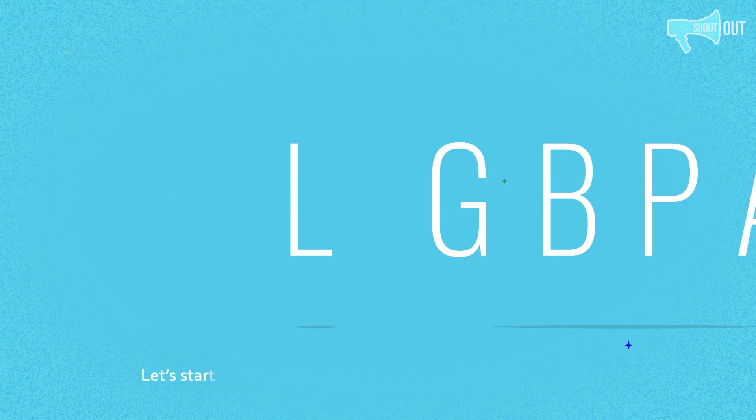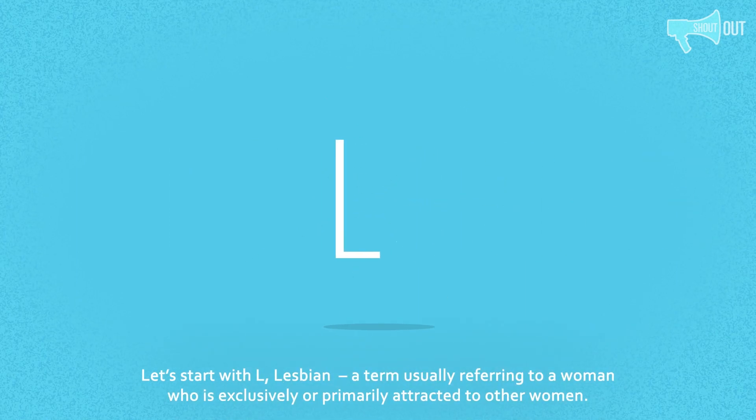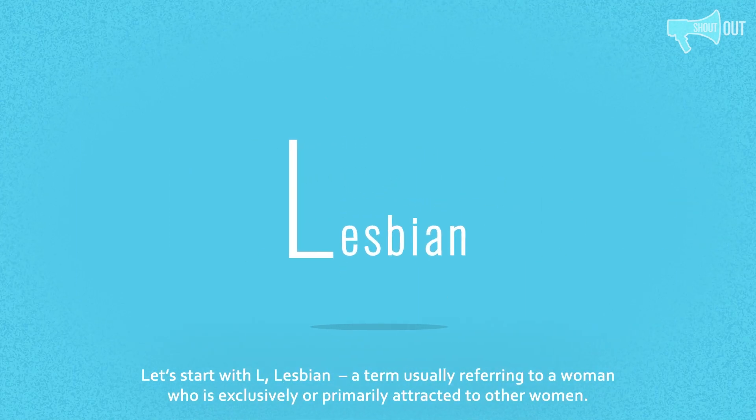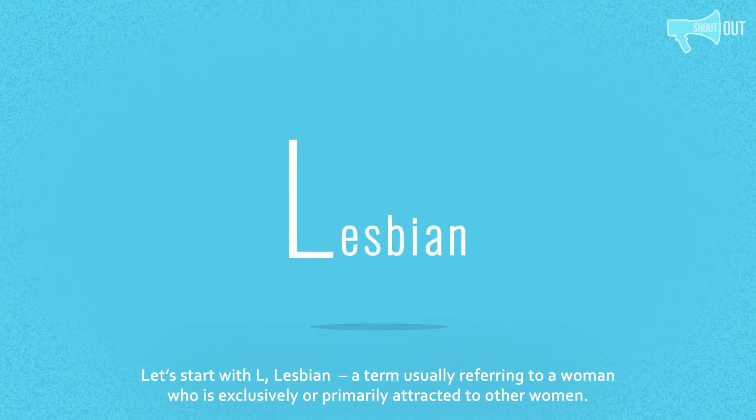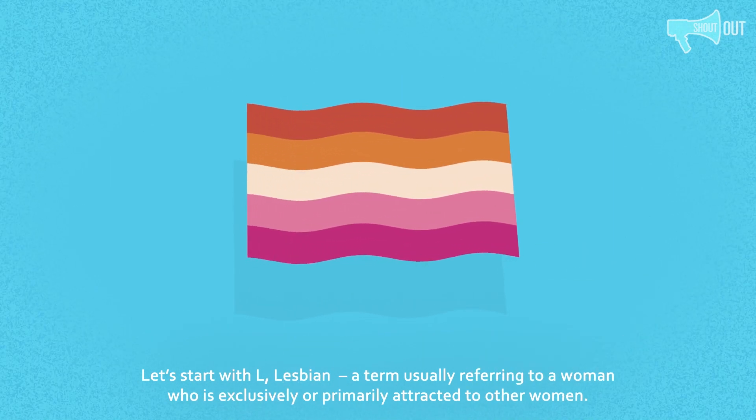Let's start with L — Lesbian, a term usually referring to a woman who is exclusively or primarily attracted to other women.